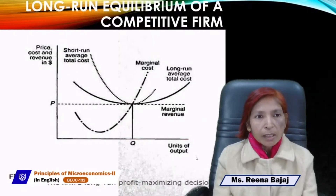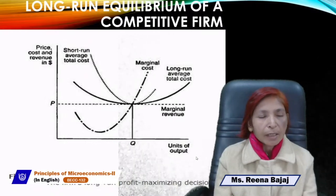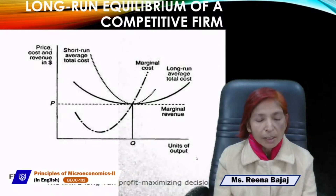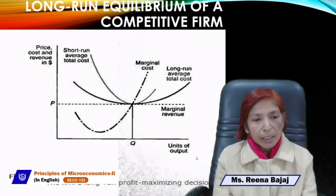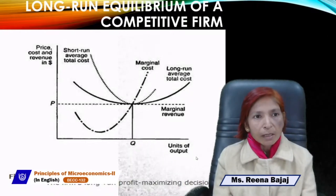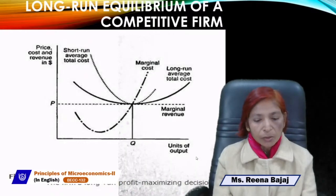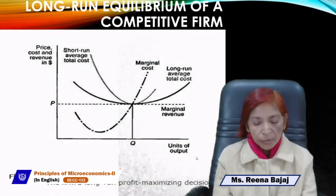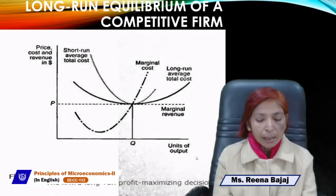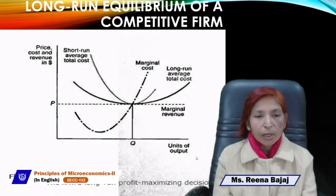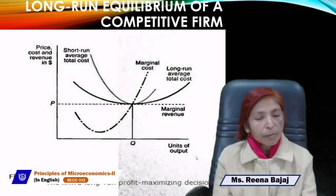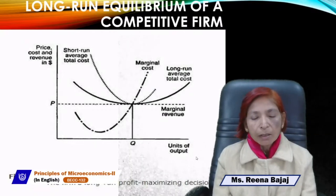In the short run, when firms earn abnormal profit, other firms are attracted and enter the market, causing profit to fall back to normal. When firms bear losses, some exit, and again equilibrium returns to normal profit. So in the long run, due to free entry and exit, the perfect competitive firm always earns normal profit where average revenue equals average cost. The AR=MR line is horizontal, and the LAC (long-run average cost) curve is U-shaped, tangent to the AR=MR line at equilibrium.